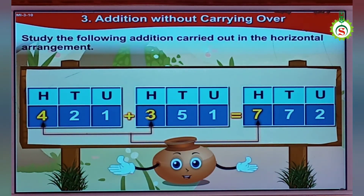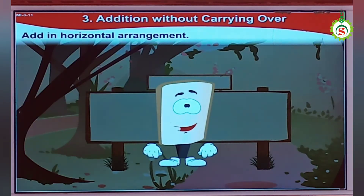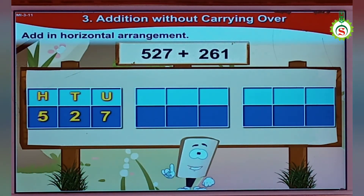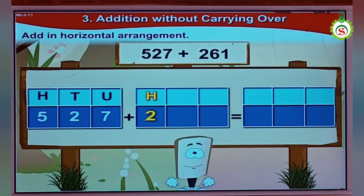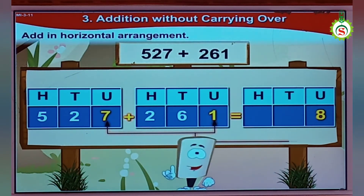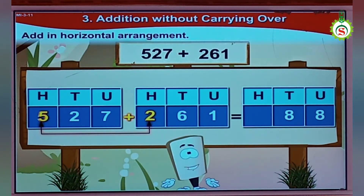You've understood the concept? Now we'll move forward to some sums. In horizontal arrangement, 527 plus 261. 527 means 500, 2 tens, 7 units. Plus 261 means 200, 6 tens, 1 unit. We'll begin our addition from the units: 7 units plus 1 unit is 8 units. 2 tens plus 6 tens is 8 tens. 500 plus 200 is 700. So, the answer is 788.